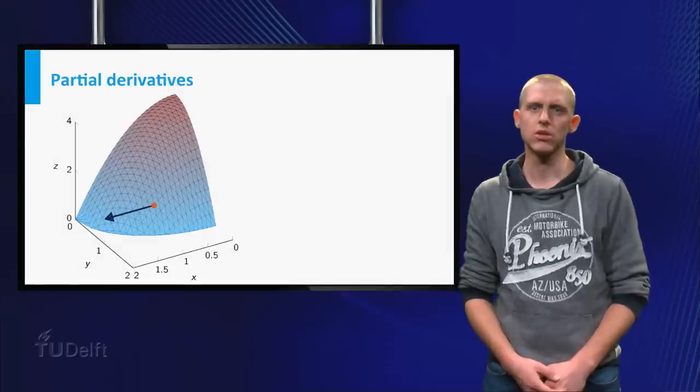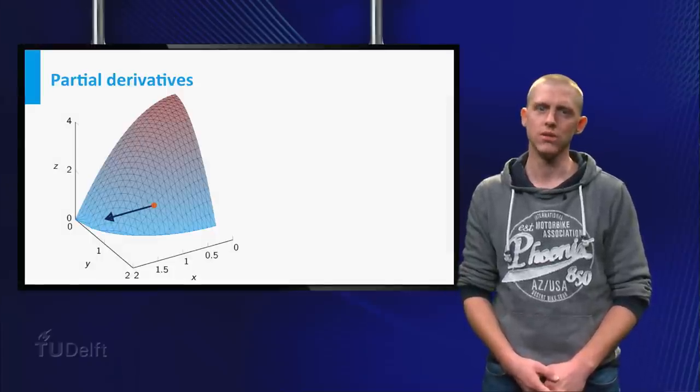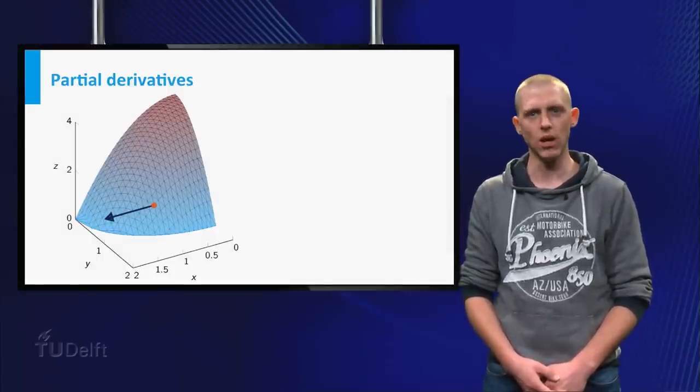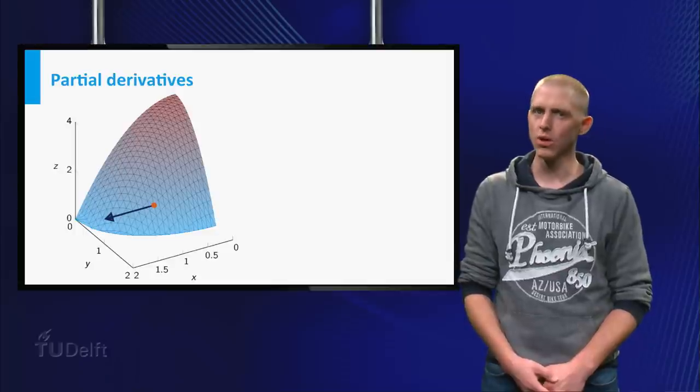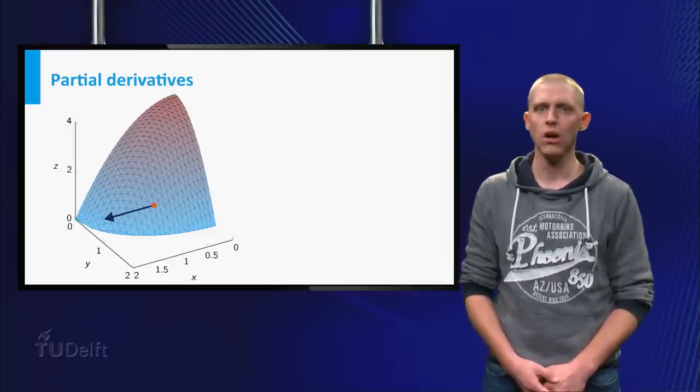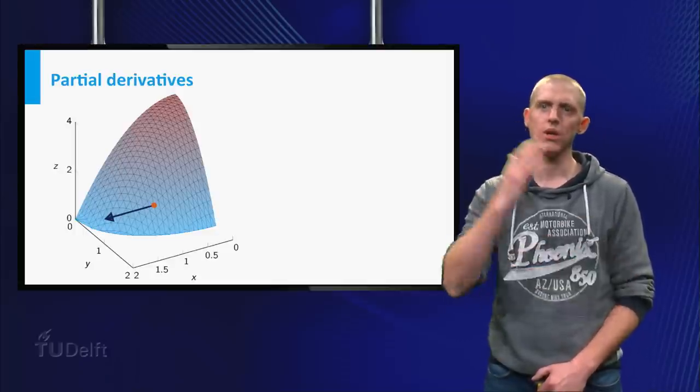Recall that if the mountain is the surface given by the function z is equal to f of x and y, then you can use the partial derivatives of this function to find the slope of the mountain in the x and the y directions.